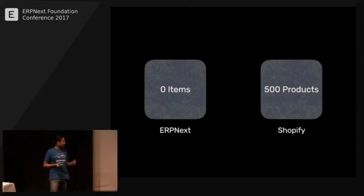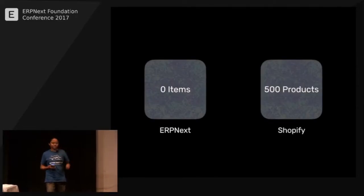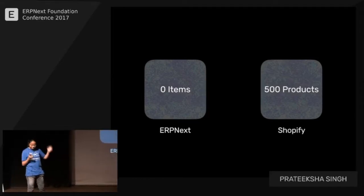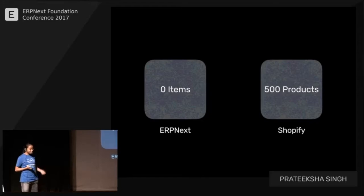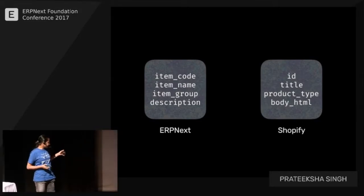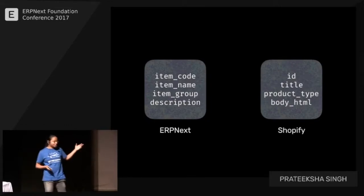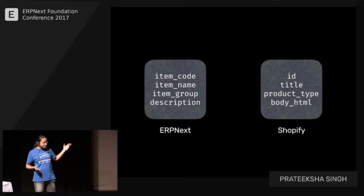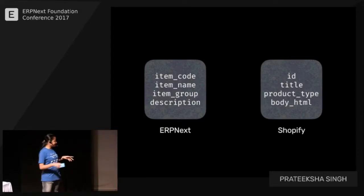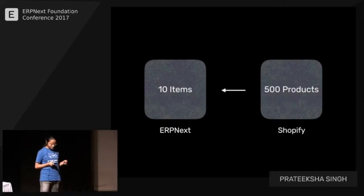It turns out that syncing data is not a very easy job. For example, if you have 500 products on Shopify and want to sync them, the first problem is that the fields of an item on ERPNext will be different from those on Shopify. You'll have to figure out how to map them, and if Shopify ever changes a field name, you'll have a hard time finding and replacing all the hardcoded fields.